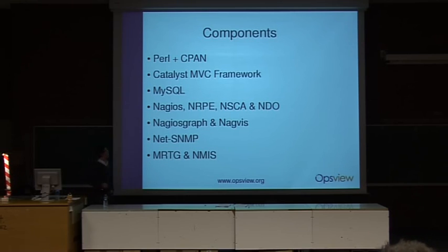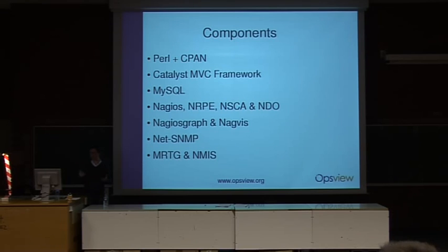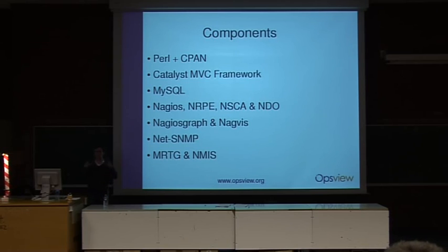In terms of what's in OpsView, it's mainly developed in Perl, so we have a lot of Perl and CPAN modules. We use Catalyst as the web framework — the application is written in Catalyst — and MySQL as the database underneath. In fact, we have four separate databases: one containing configuration, one containing current status information, a data warehouse, and a reporting database. We bring together Nagios and associated Nagios tools, integrate components from the Nagios ecosystem, and also bring in Net-SNMP, MRTG, and NMIS.